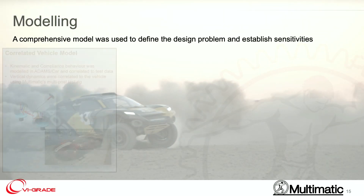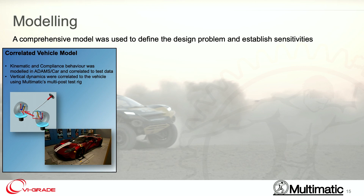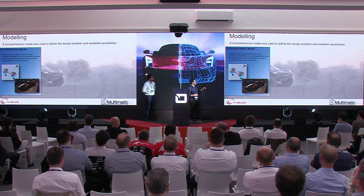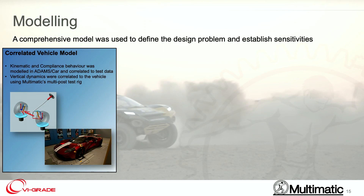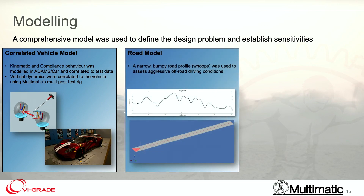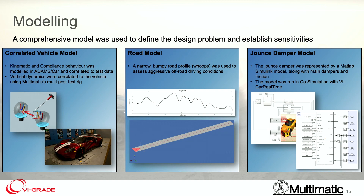Now let's talk about the model. There are three things that are critical. First, you need a correlated vehicle model. We start by building the model in Adams/Car using hard points and correlating it to kinematics and compliance data. From there, we convert it to a VI Car Real-Time model and correlate it to the vertical dynamics using our multi-post rig. The next thing you need is a road model — the road we're using to represent aggressive off-road driving is something we call the WHOOPS profile. Finally, we need an actual model of the component we're modeling. We use VI Car Real-Time running co-simulation with MATLAB Simulink, where a Simulink model represents all the motion and forces within this jounce damper. This makes it easily interface with VI Car Real-Time, and it's easily changeable and tunable.